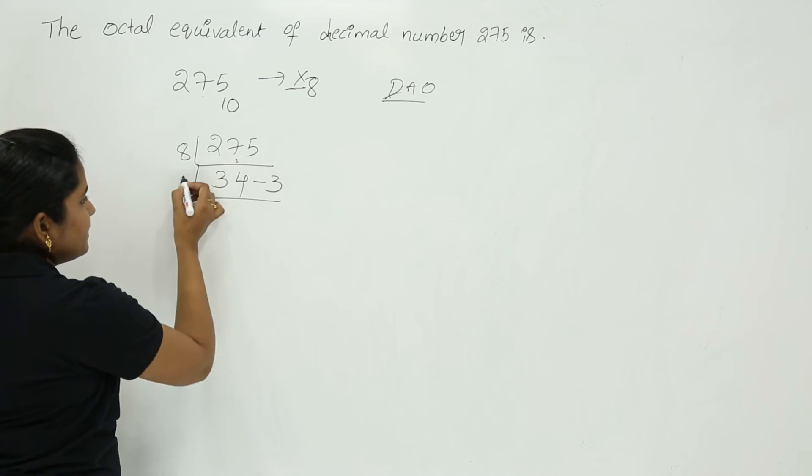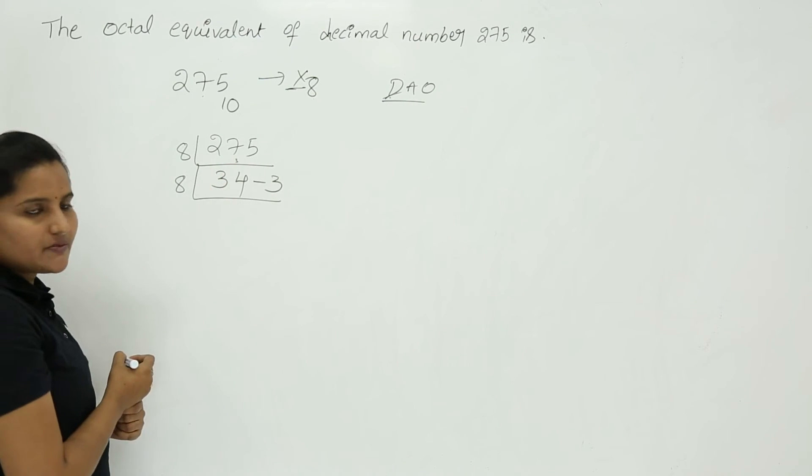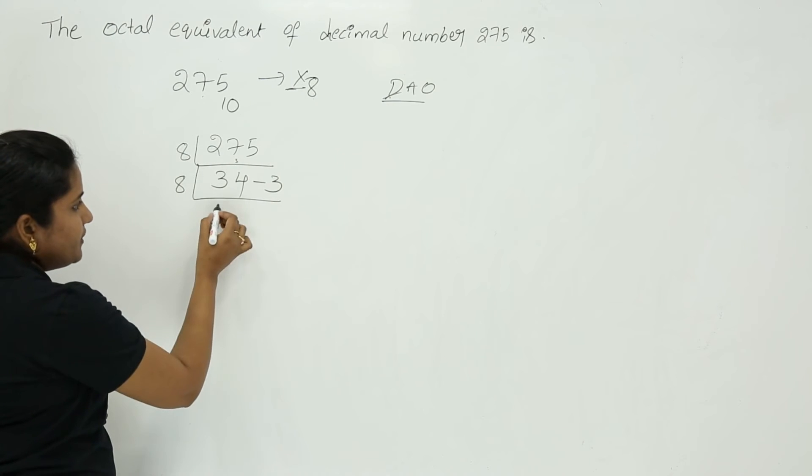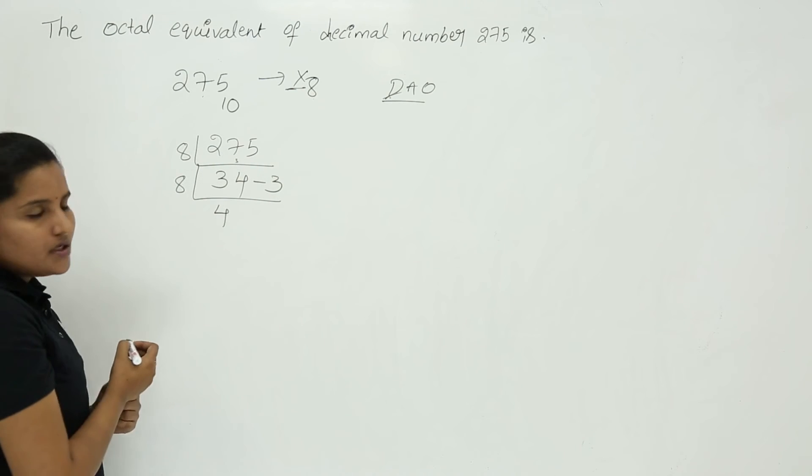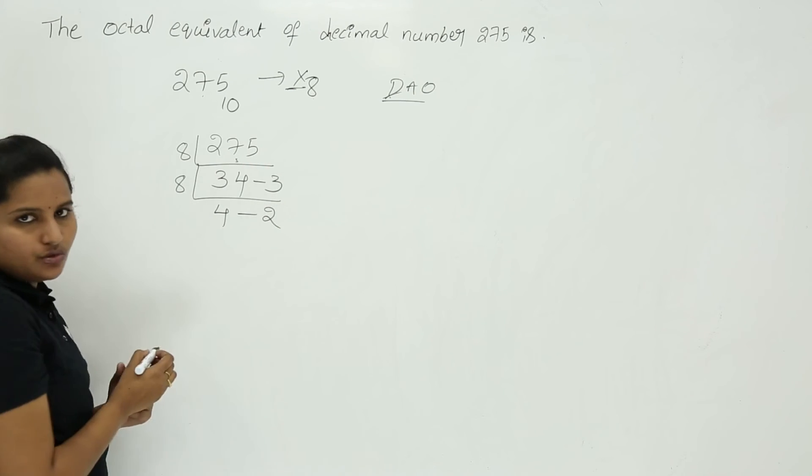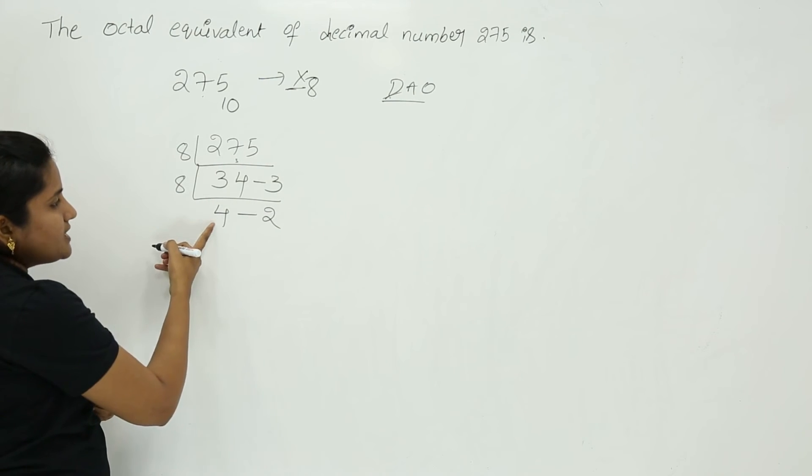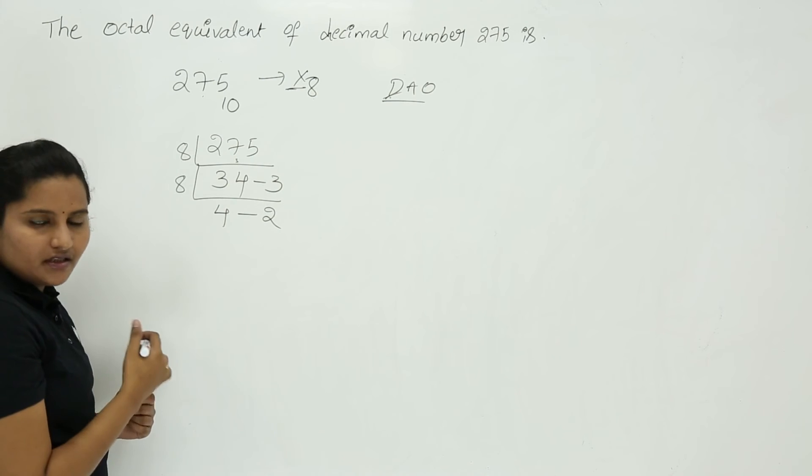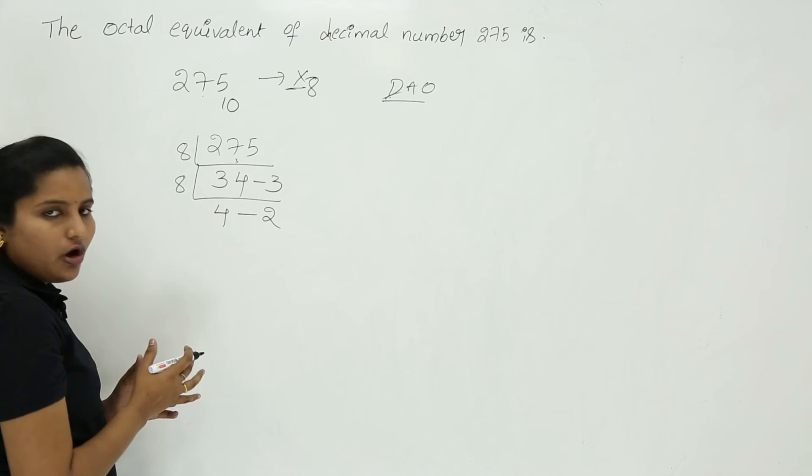Here again taking successive division with respect to 8. Again 8 times 4 is 32. So here 8 times 4 is 32 means remainder is 2. See here 4 is less than 8, no need of another division, so we can stop here.